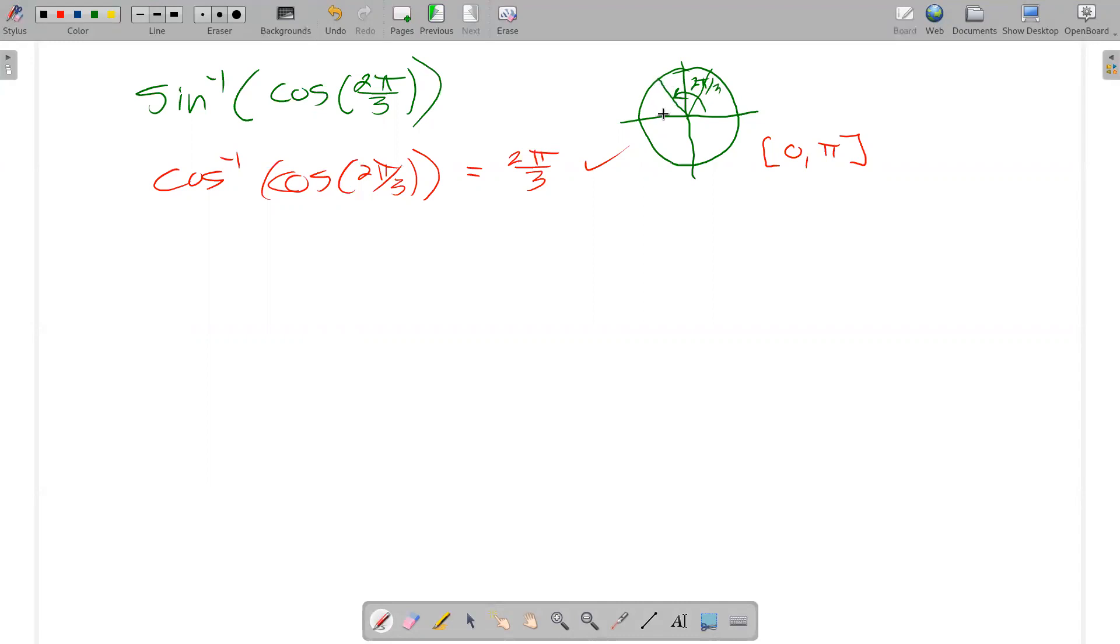And cosine is an x value on the unit circle, so that should be negative 1 half. So, I can rewrite this as the sine inverse of negative 1 half.